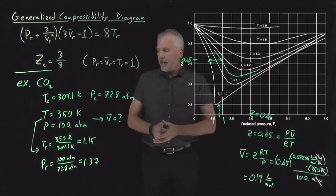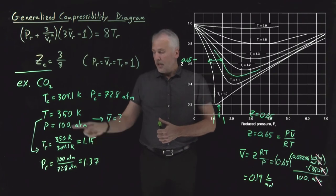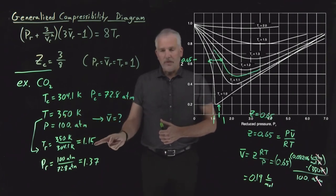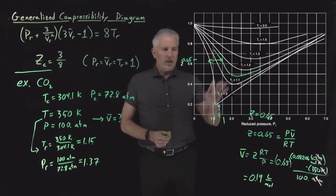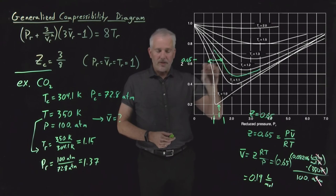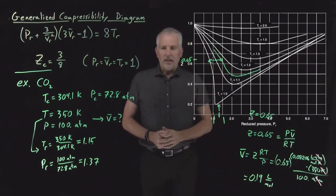So if I did have supercritical carbon dioxide at a temperature of 350 Kelvin and 100 atmospheres, in other words, 15% above its critical temperature, 37% above its critical pressure, I can predict just graphically by reading off of this diagram that the molar volume is going to be roughly 0.19 liters per mole.